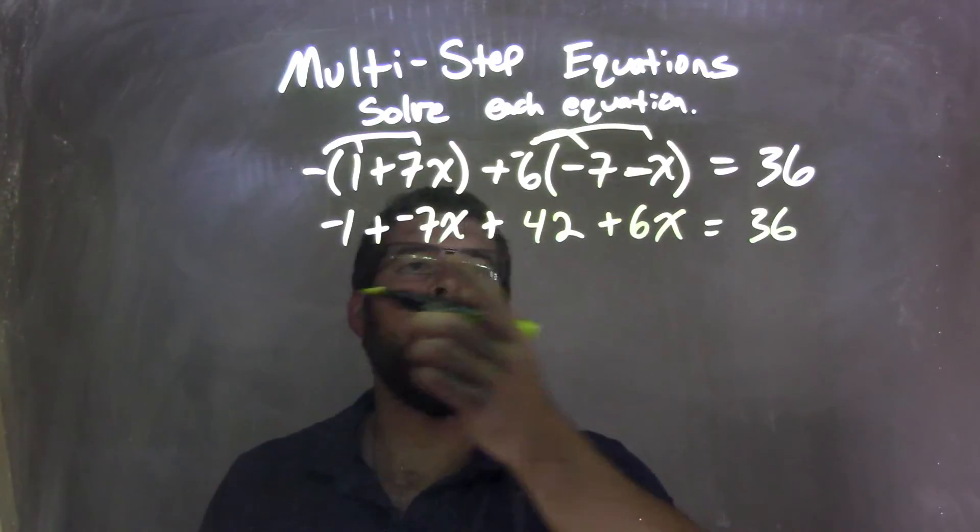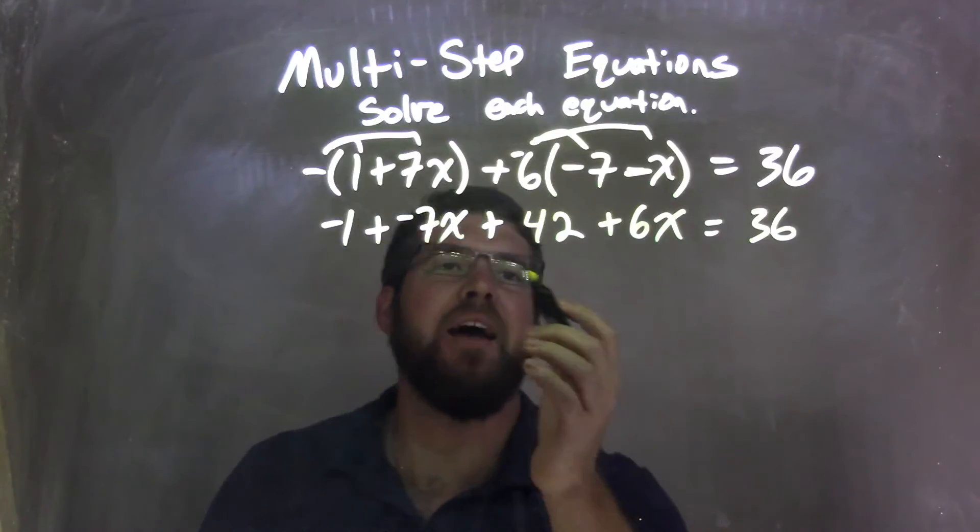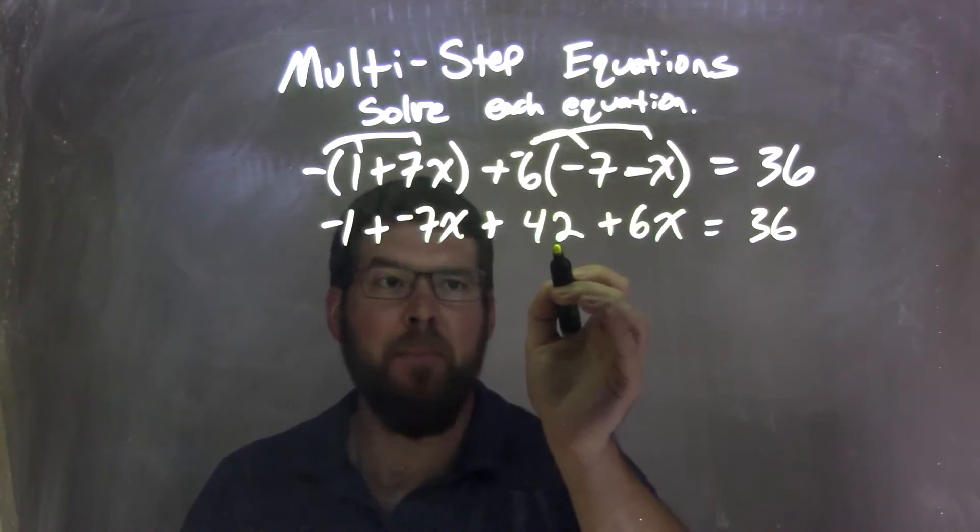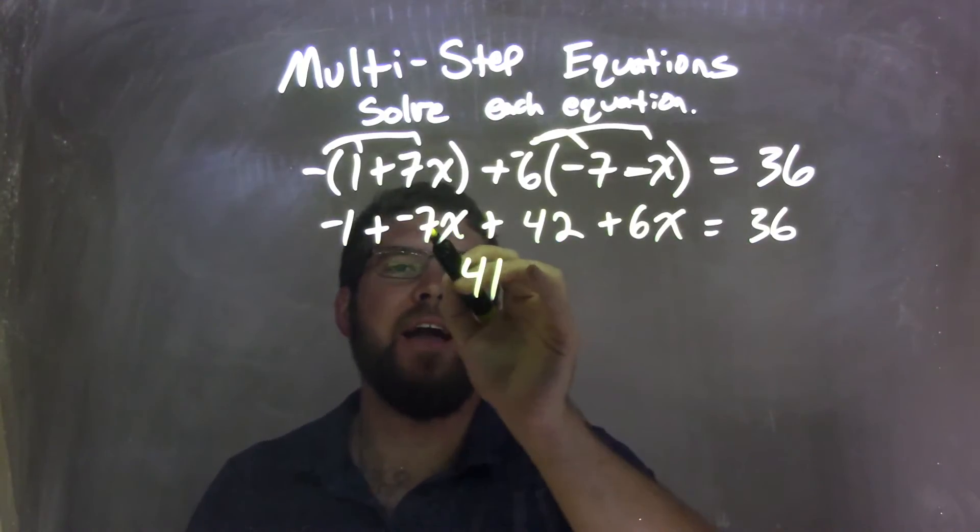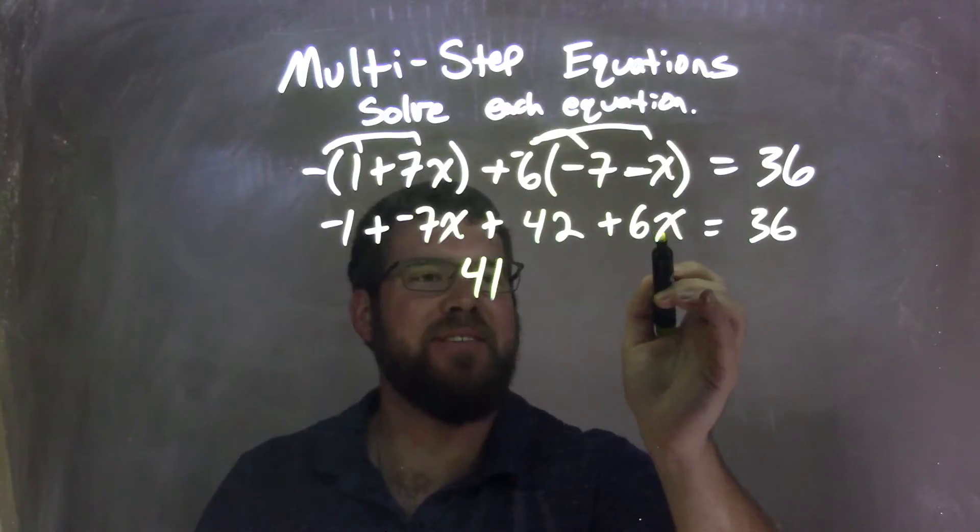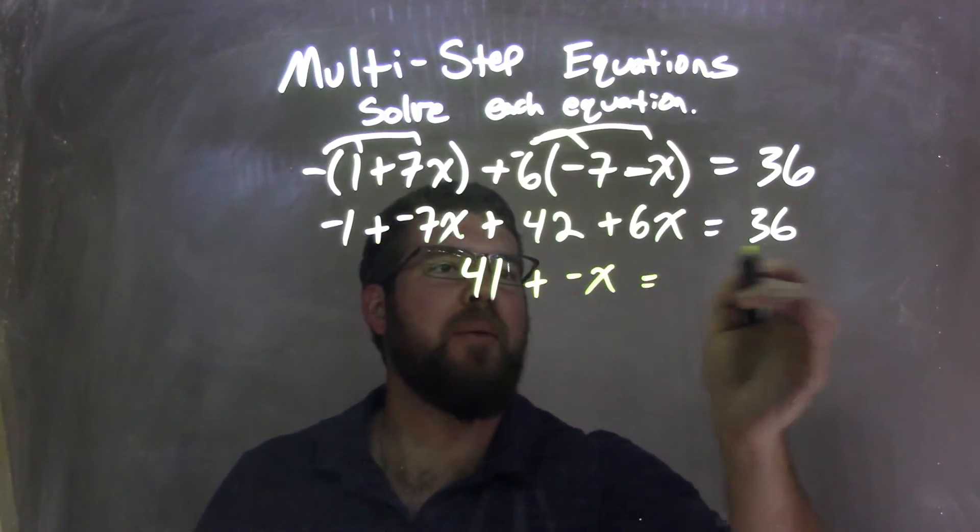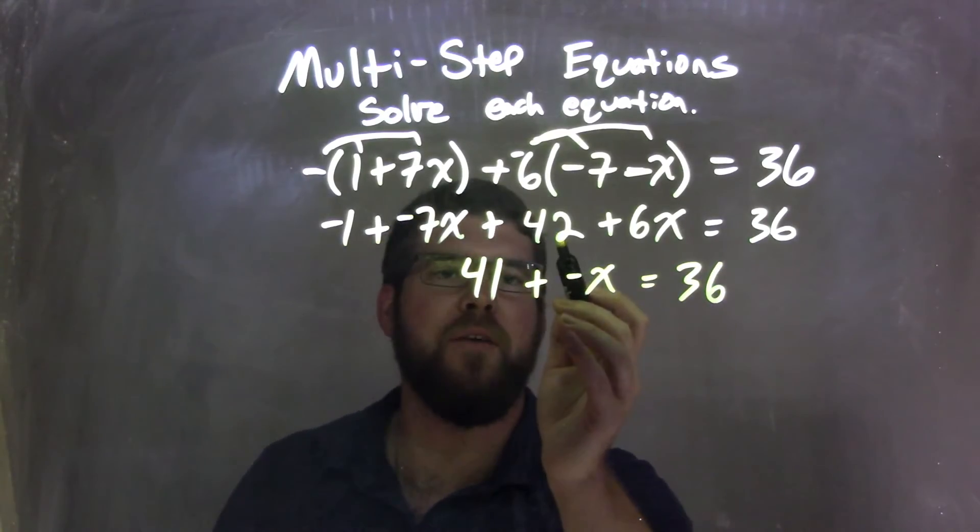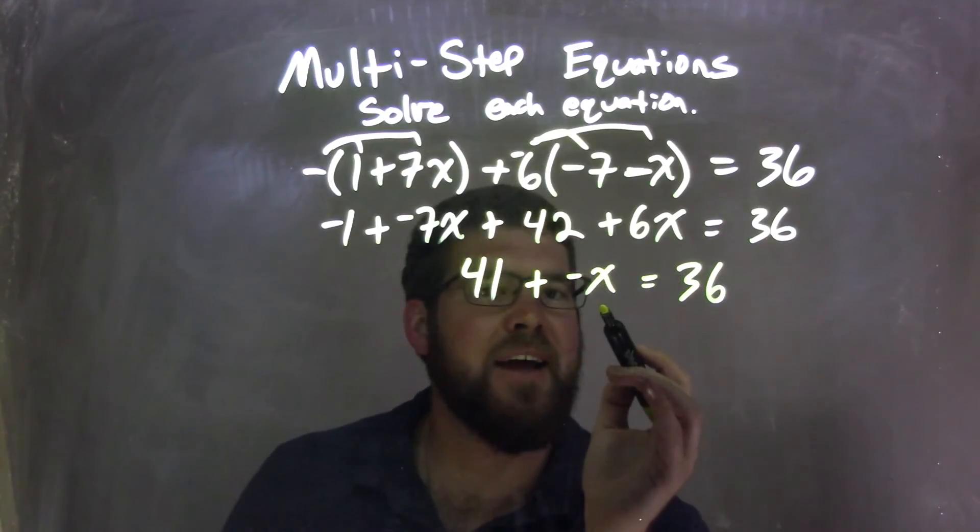And by doing that, all adding, and the negatives, even negatives, and we get plus a negative, I find it easier to combine. Negative 1 plus 42 is a positive 41. Negative 7x plus 6x is negative, just 1x. Then we have 36 on the right. So make sure we got everything. We brought the negative 1 and 42 together, we get a positive 41. And negative 7x plus 6x, get a negative x.